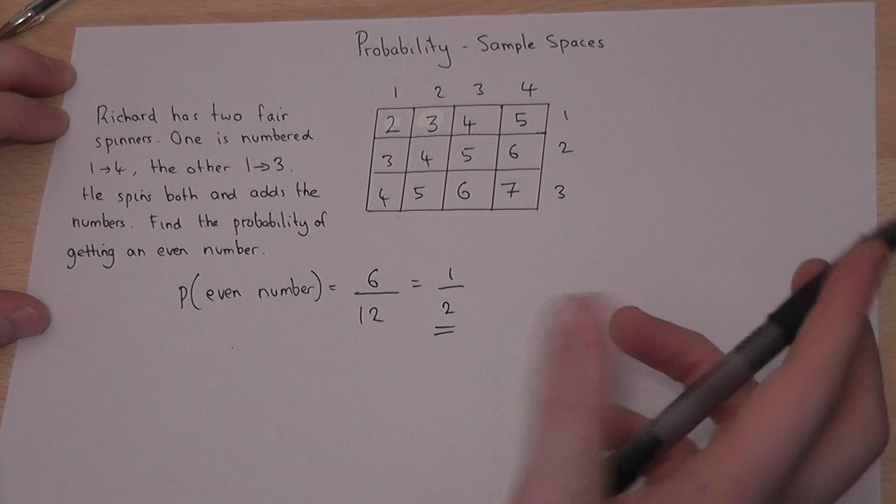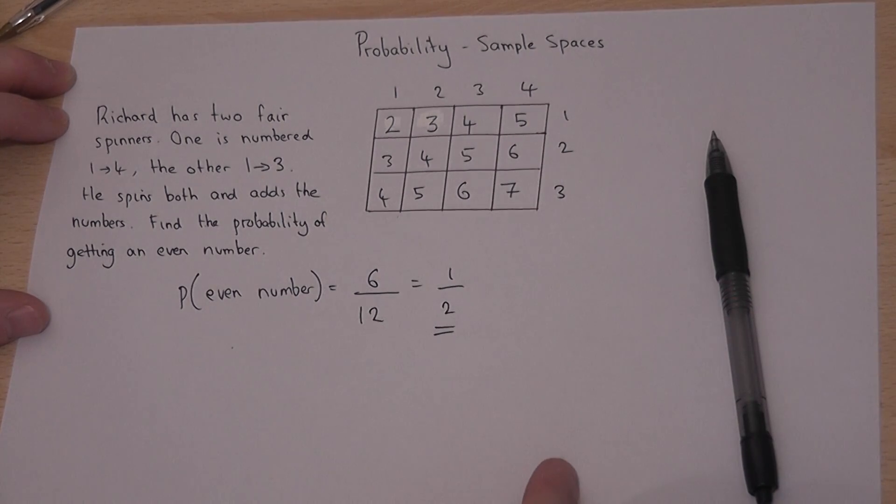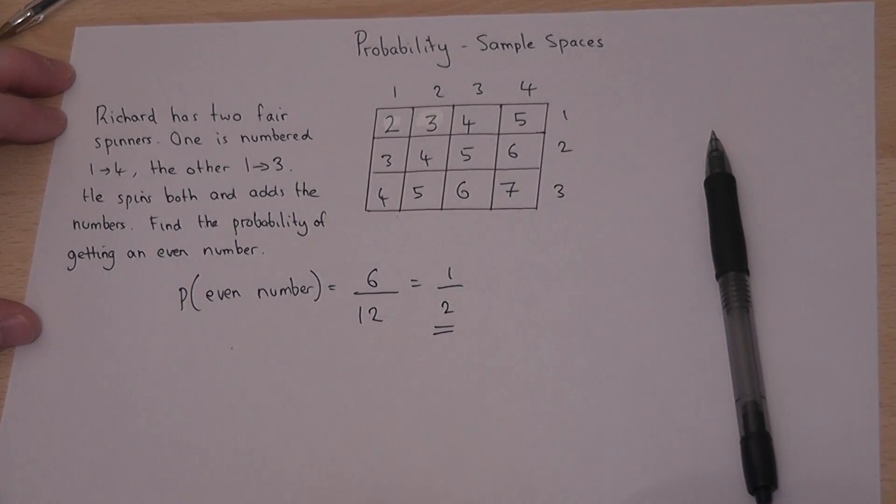So a sample space lists all the outcomes in a logical, systematic manner to help you then solve the problem being asked.